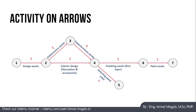After substructure works comes superstructure works, which will take four months. Activity four-to-six can only start after both activities three-to-four and two-to-four are finalized, because you cannot start finishing works unless the full structure and interior design are complete. Substructure and superstructure works together consume six months, while interior design only takes two months — so interior design is not a critical activity and could be delayed up to four months without affecting the overall schedule.